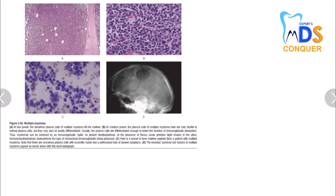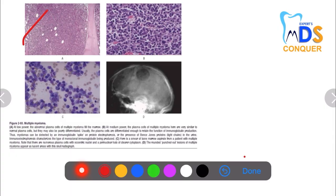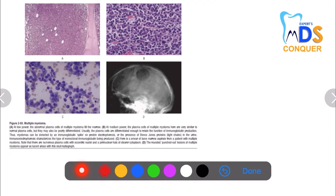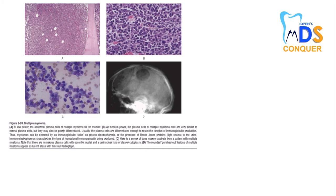Next, multiple myeloma. In low power mode there are abnormal plasma cells, and in medium power mode these plasma cells look similar to normal plasma cells but are poorly differentiated, with Bence Jones proteins (light chains) visible in the urine. In the third picture — a bone marrow aspirate smear — you can see numerous plasma cells with eccentric nuclei and a perinuclear halo of clear cytoplasm. The last picture shows punched-out lesions in the skull. This is a clear picture of multiple myeloma, a disorder of plasma cells.